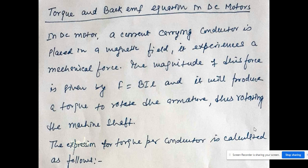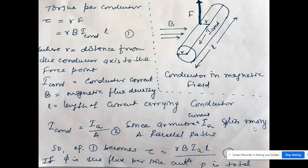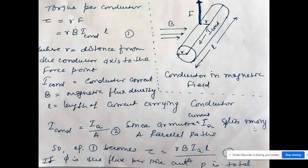This force produces a torque to rotate the armature, which rotates the machine shaft. To calculate the expression for torque, we first calculate it for a single conductor and then multiply by the total number of conductors to get the total torque developed in the armature. The torque formula is T = R × F, where R is the distance from the conductor axis to the force point.